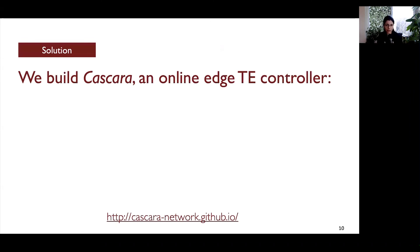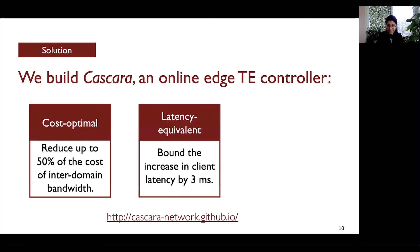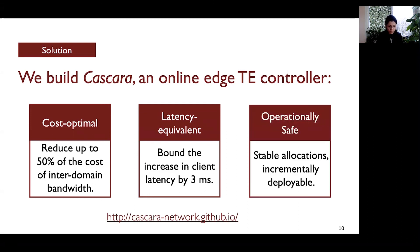Bringing all these ideas together, we develop an edge traffic engineering controller called Cascara. This controller implements the online algorithm for minimizing inter-domain bandwidth costs. We evaluate the online solutions and show that Cascara can reduce bandwidth costs by up to 50% per point of presence. More importantly, Cascara optimizes traffic costs within a group of latency-equivalent links, bounding the impact of cost-optimal allocations to 3 milliseconds in the worst case. Since operational safety of such a solution is key, we incorporate several safety checks into Cascara. For more details on our implementation, code, and measurements, please check out our paper.